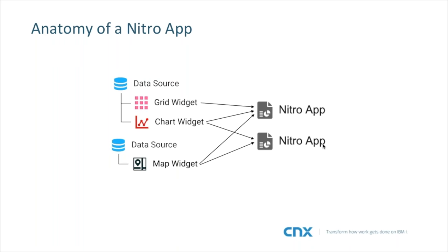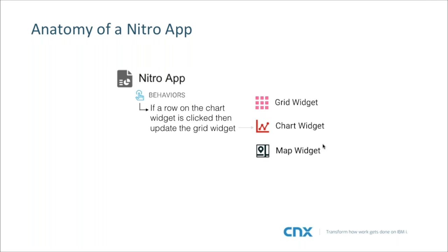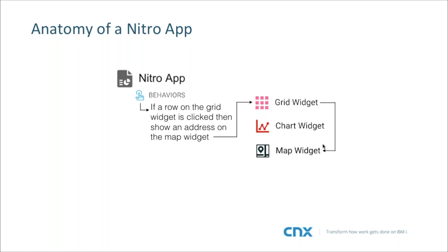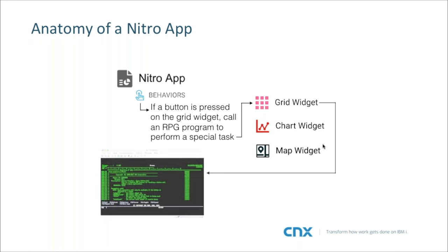You also define behaviors, which are like user actions. For example, a behavior could be: if a row on a chart widget is clicked, then filter a grid widget. Or if a row on the grid widget is clicked, update a map widget — you'll actually see that in our demo today. You can also do things like: if a button is pressed on the grid widget, call an RPG program to perform a special task.